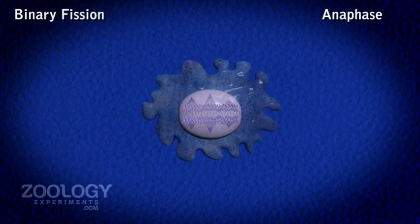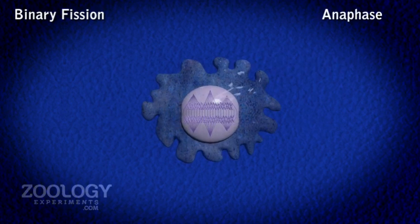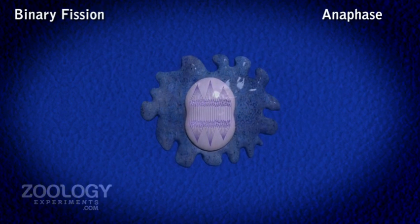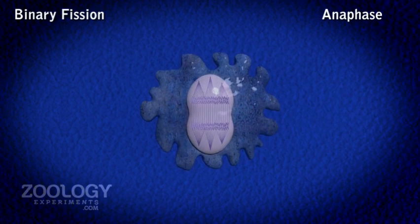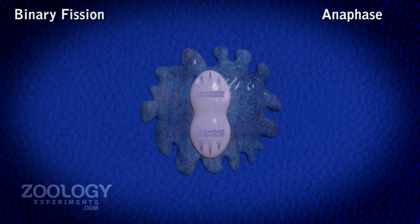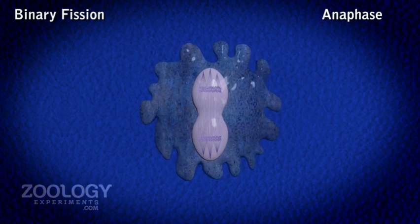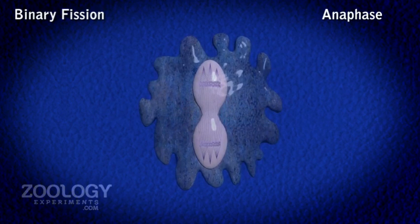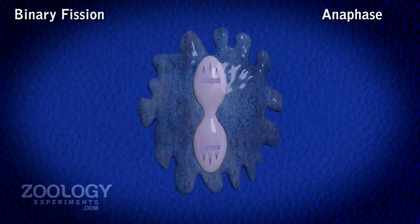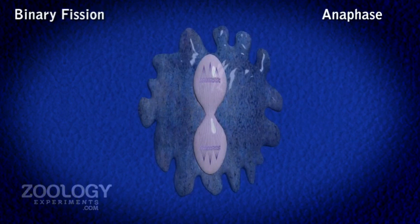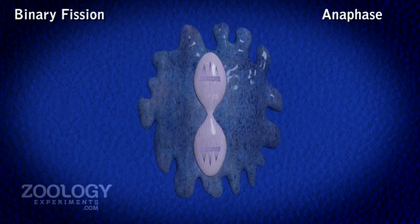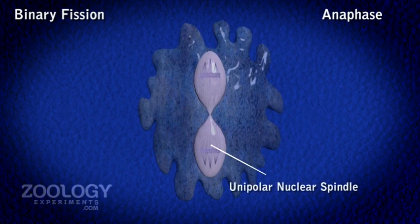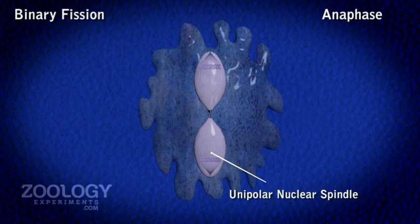During anaphase, daughter chromosomes move towards opposite poles and constriction of the nuclear membrane begins in the middle. The nuclear spindle, which was multipolar at metaphase, becomes unipolar at the end of anaphase.